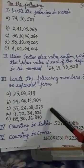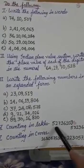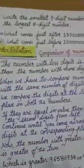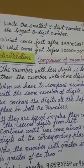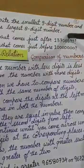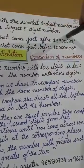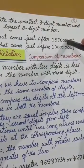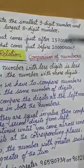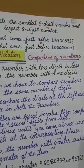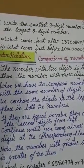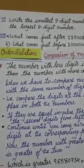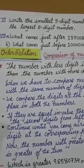There are also questions on counting in lakhs and counting in crores. Question 6: write the smallest nine-digit number and the largest eight-digit number. The last question asks what comes just after a given number — for 'after' we add one, and for 'before' we subtract one. That's all for now; we'll continue in the next class.